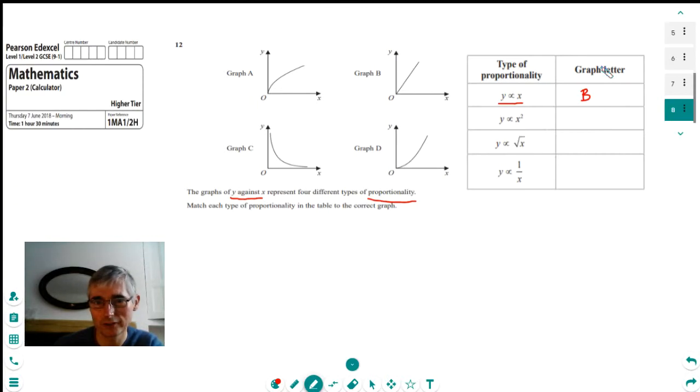If we look at the next one, we're saying that y is proportional to x squared. So really, what that's telling us is that as x increases, y increases at the square of the rate that x increases. So y is going to increase at a more rapid rate than x. And the only graph in which y increases more quickly than x is graph D. Because we can see that graph A, x actually increases more quickly than y. And in graph C, as x increases, y decreases. So this has got to be graph D.